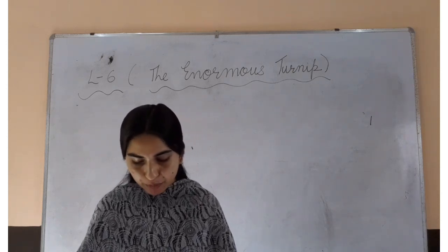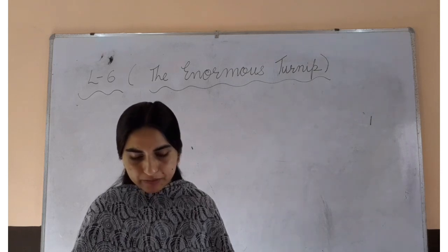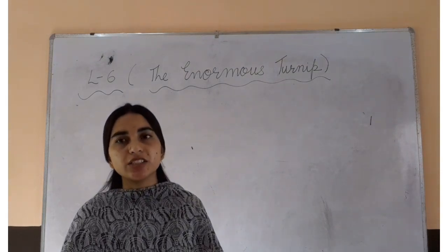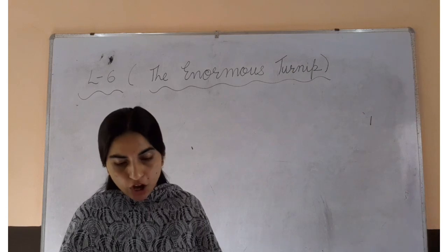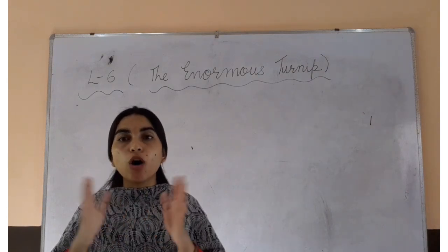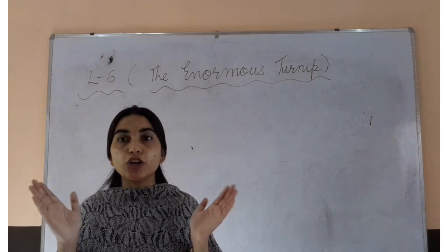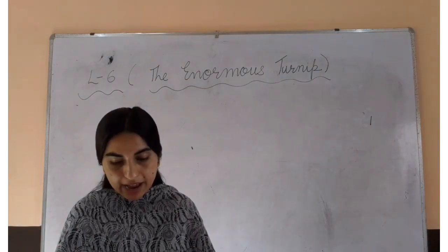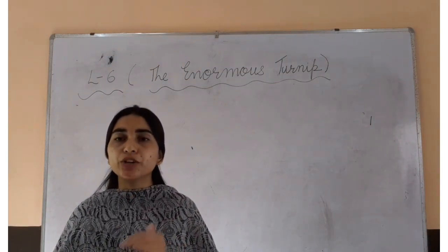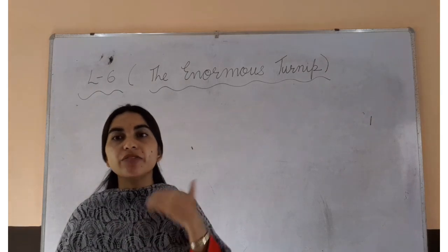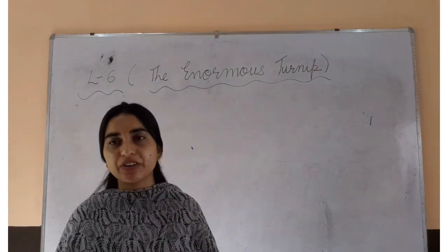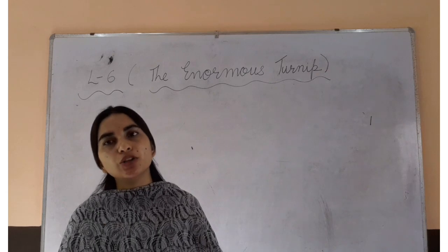On page number 24, there are two difficult words which you will write in your notebook. First one is enormous. Enormous means bohat bada — huge, vishalkai. And grew. Grew ka matlab hota develop. Grew means badna, develop hona. So these two words you will write in your notebook.